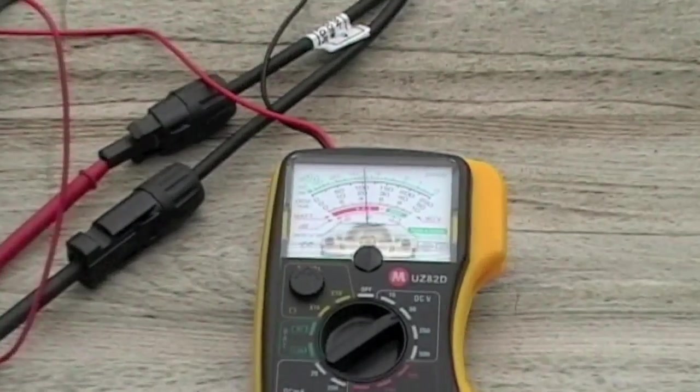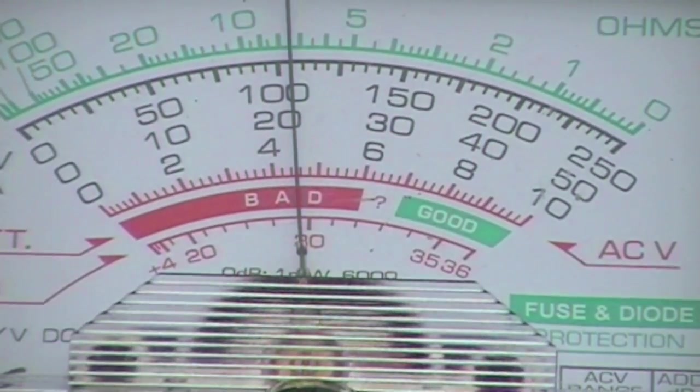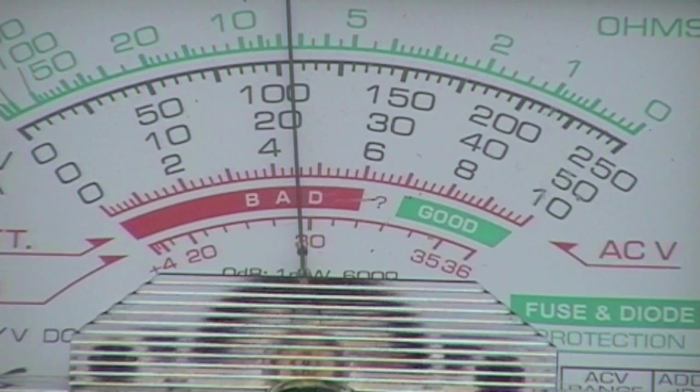I'll zoom in on the multimeter, which is set to the 10 to 50 volt range. It's actually reading just over 20 volts, way above the 12 I was expecting, but I guess that's where the next gadget comes in.